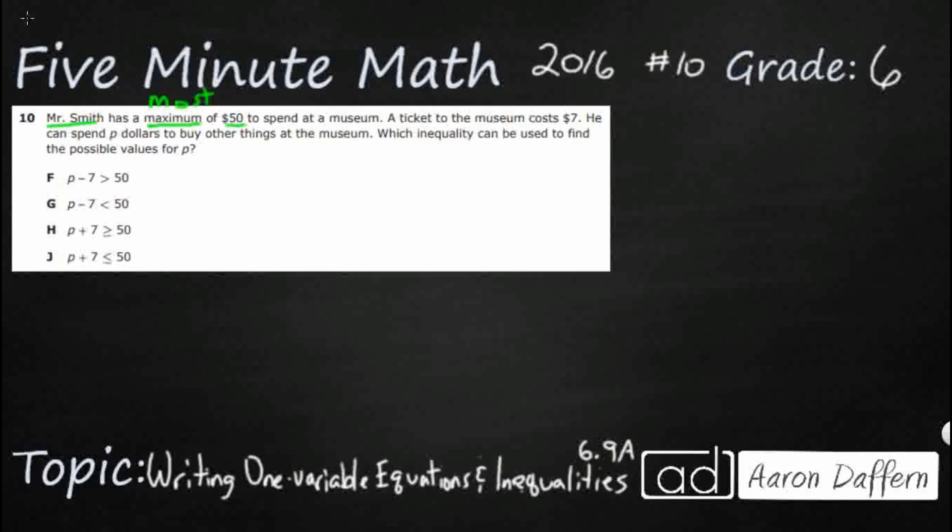So a ticket is going to cost $7, and then he can spend P dollars to buy other things in the museum, which inequality can be used to find the possible values for P.